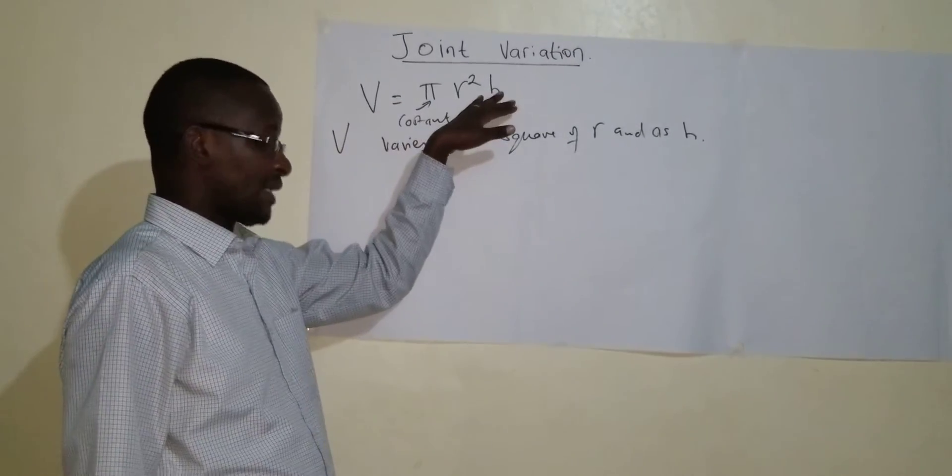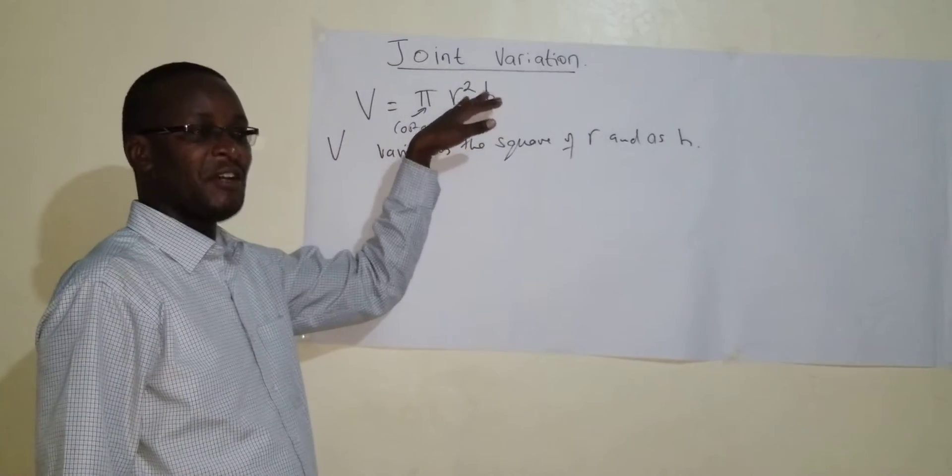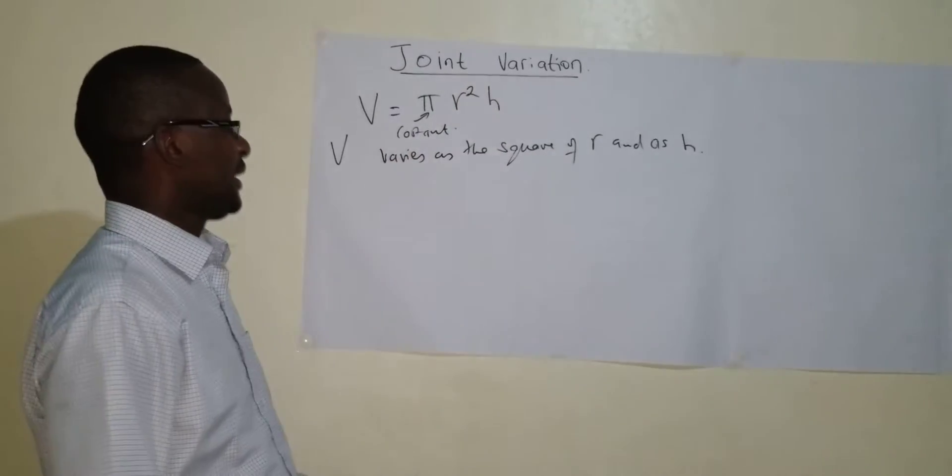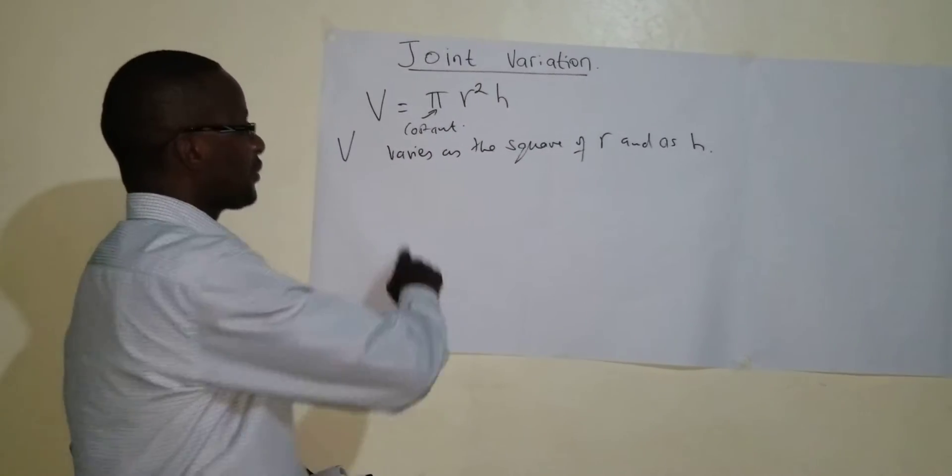But now they are just in the numerator, meaning they are varying directly. So here, if I was to rewrite this,